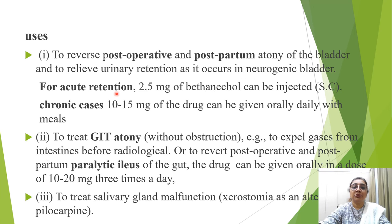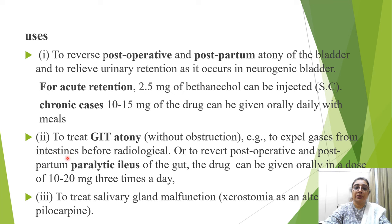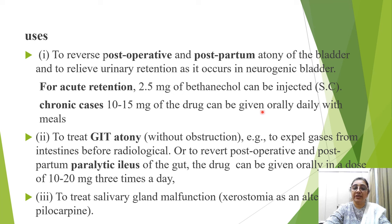Bethanechol is the only directly acting parasympathomimetic drug currently available. Its uses include postoperative and postpartum neurogenic bladder and paralytic ileus, conditions where smooth muscle tone is reduced. For acute urinary retention, 2.5 mg can be injected subcutaneously; in chronic cases, 10 to 15 mg orally with daily meals.